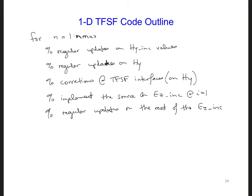Of course, not the last one, because that's a PEC. Since this will be a loop that'll just go from 2 to i max minus 1, it doesn't include the source. So the source could be either before or after the regular Ez updates.